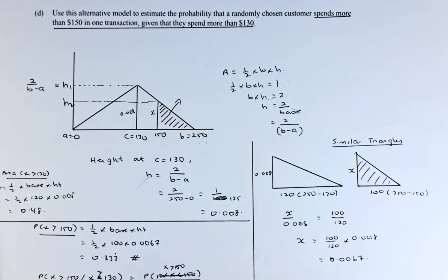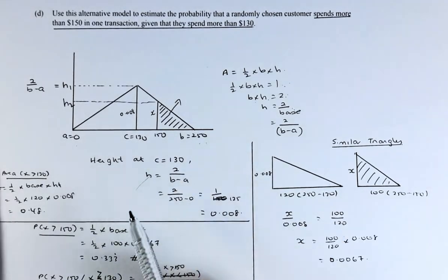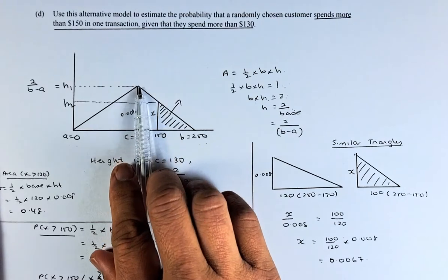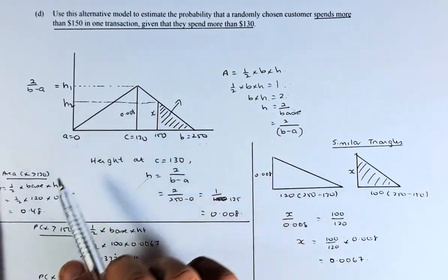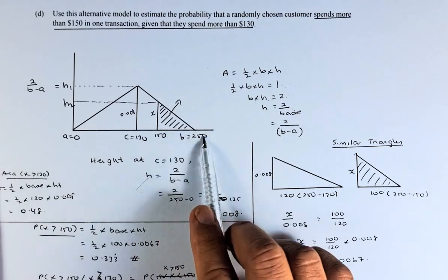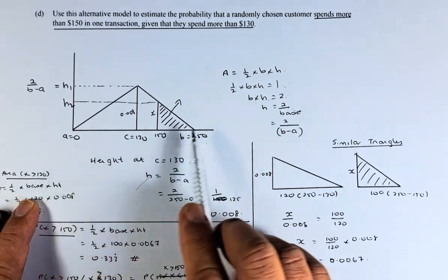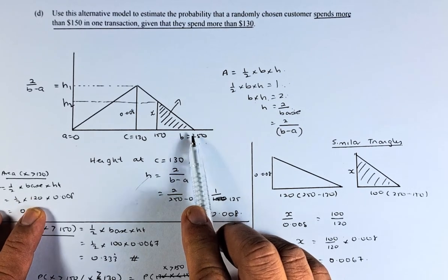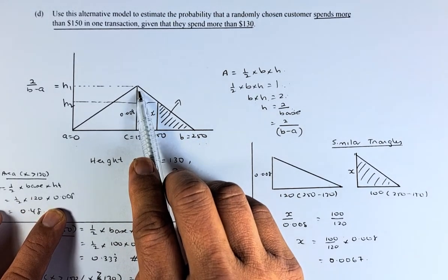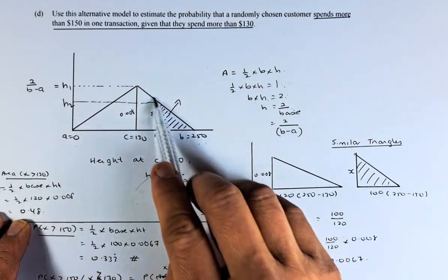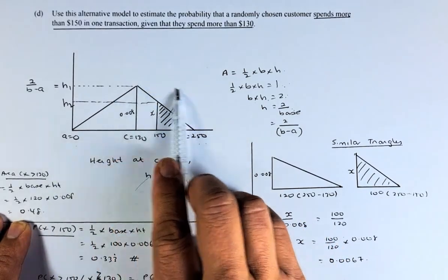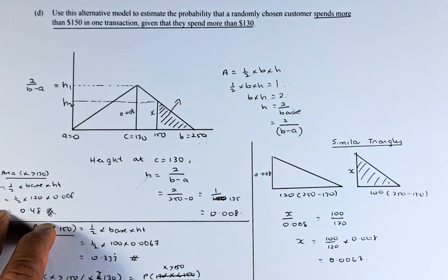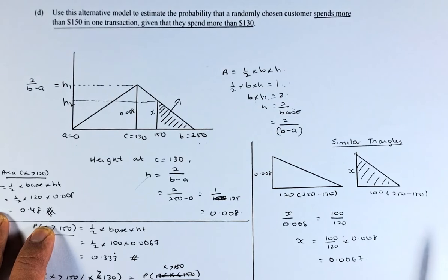Now, once we have found the height at C, we can find the area because they asked you to spend more than $1.30, so we need to find this area here onwards. To do that, we've got half base times height. The base is from $1.30 to $2.50, which is $1.20. The height we found earlier is 0.008. Use your calculator. The area of more than $1.30 is going to be 0.48. We need to use this number later on in our calculation.